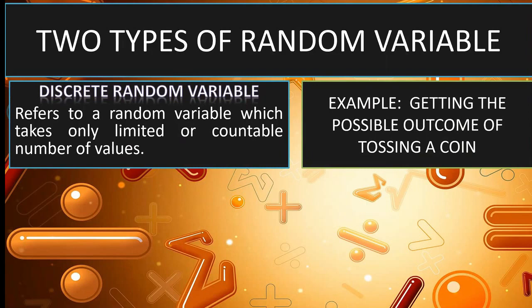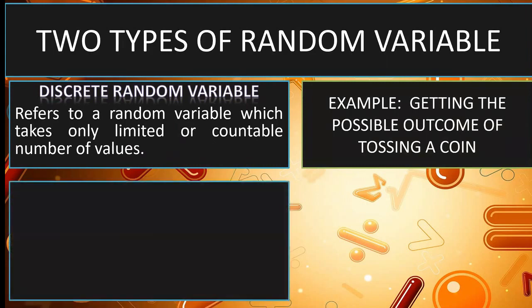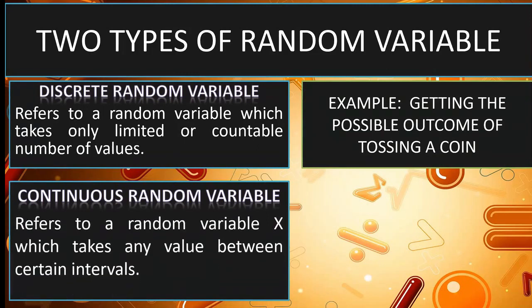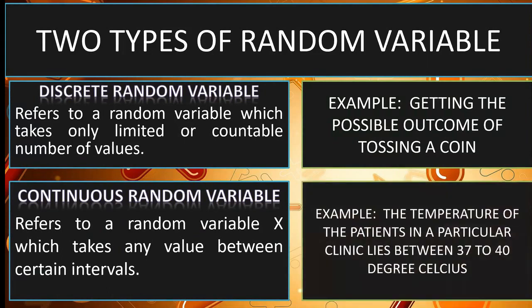Another type of random variable is continuous random variable. And it refers to any value between certain intervals. An example for this is the temperature of a patient in a particular clinic lies between 37 to 40 degrees Celsius. Since it lies between an interval, it is considered as continuous random variable. Another example of continuous random variable is the distance you travel from your house to school.